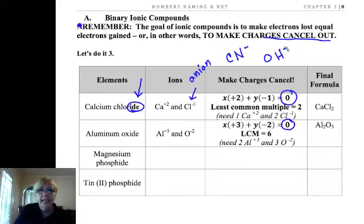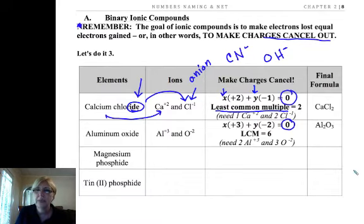Now to do these, what you want to do is write the ions. Calcium's group two so it's always plus two. Chloride's minus one when it's ionic. Now we want the lowest whole number ratio, so we need to find the least common multiple. Two ways to do this: you can set up an algebra. I need some number of calcium times plus two, some number of chlorides times minus one, and you want the least common multiple, the lowest whole number ratio that will make that zero.